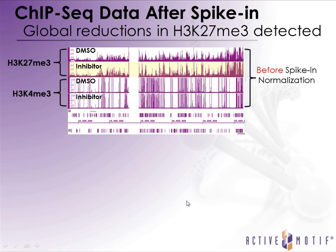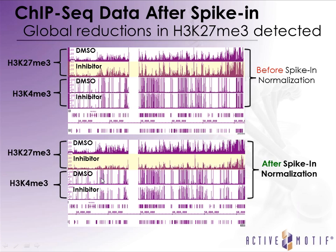Here's an example of what that looks like pre- and post-normalization. The K27 trimethylation DMSO-treated sample looks very similar to the inhibitor-treated sample before normalization — it's very difficult to tell any differences in enrichment. As a comparison, K4me3 is not expected to change after treatment. After spike-in normalization, you can see a drastic reduction in K27 trimethylation signal, while K4me3 remains the same — which is exactly what you would expect for these biological differences.